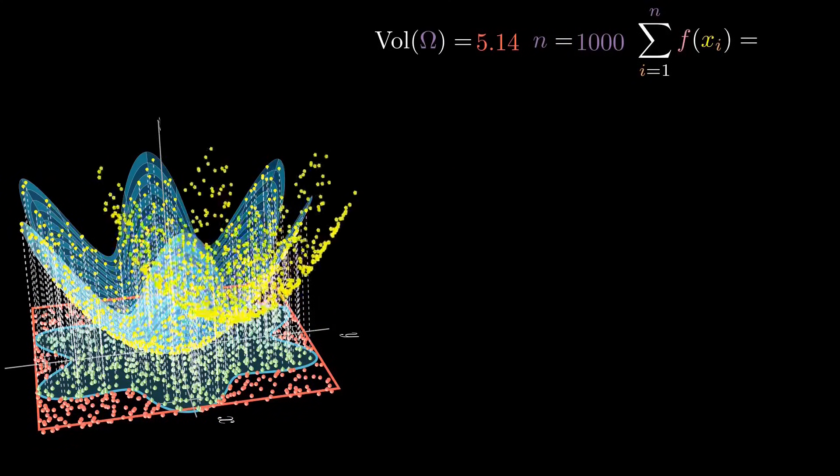Next, we'll compute the quantities needed for our estimator. We can calculate the volume of the box easily. n, the number of samples, is 1,000. Now we compute the sum of the function values of the samples.